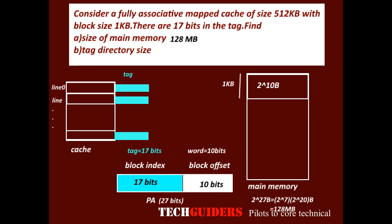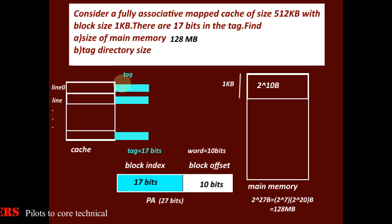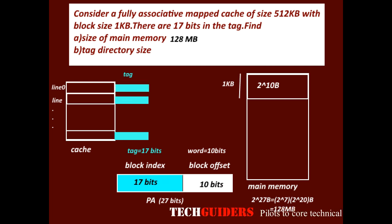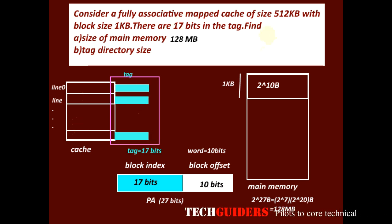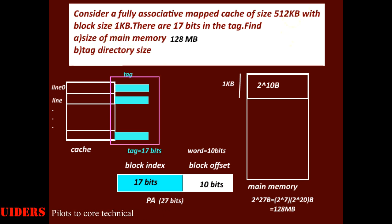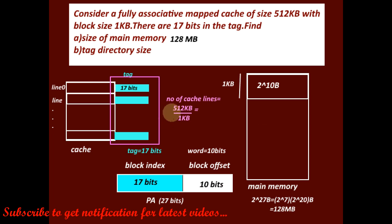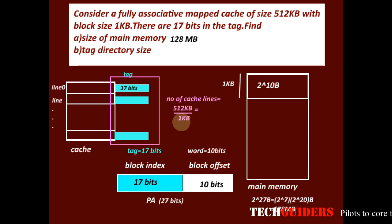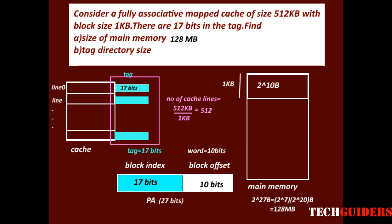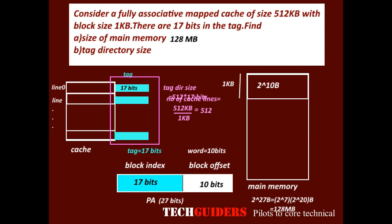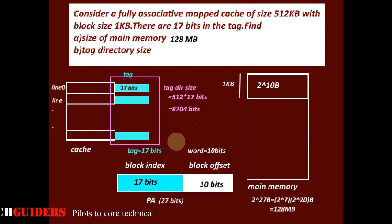Now, what is the tag directory size? In fully associative mapping, each cache line is associated with a tag, and the block index is used as the tag, so each tag entry is 17 bits. The total number of tag entries equals the number of cache lines. The number of cache lines is the cache size (512KB) divided by the cache block size (1KB), which is 512. So there are 512 tag entries, each of size 17 bits, giving a total tag directory size of 512 × 17 = 8704 bits.